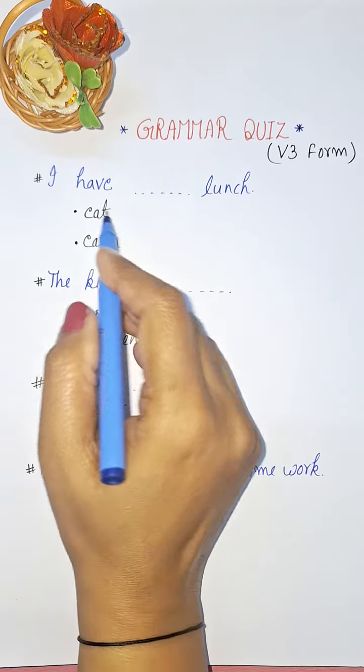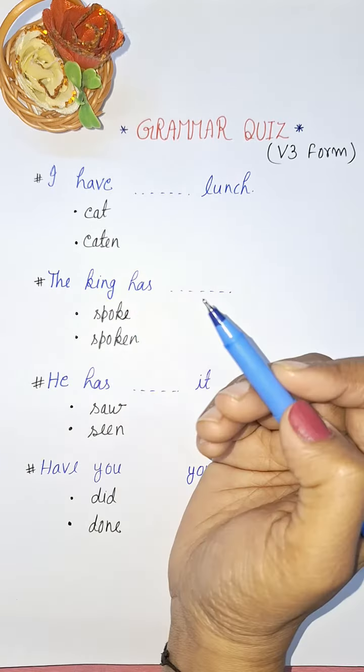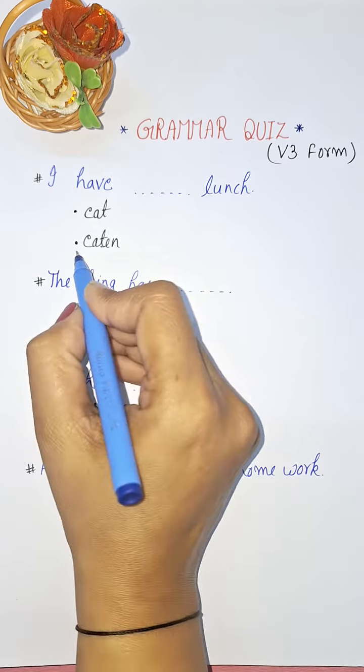I have ___ lunch. So which form will be the right one here? The right one will be eaten. I have eaten.